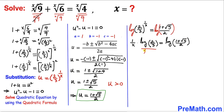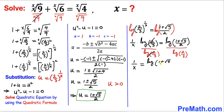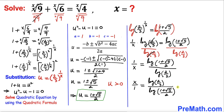Dividing both sides by log(2/3), they cancel on the left, giving us 1/x equals log[(1 plus square root of 5)/2] divided by log(2/3). Flipping both fractions on both sides, x equals log(2/3) divided by log[(1 plus square root of 5)/2].